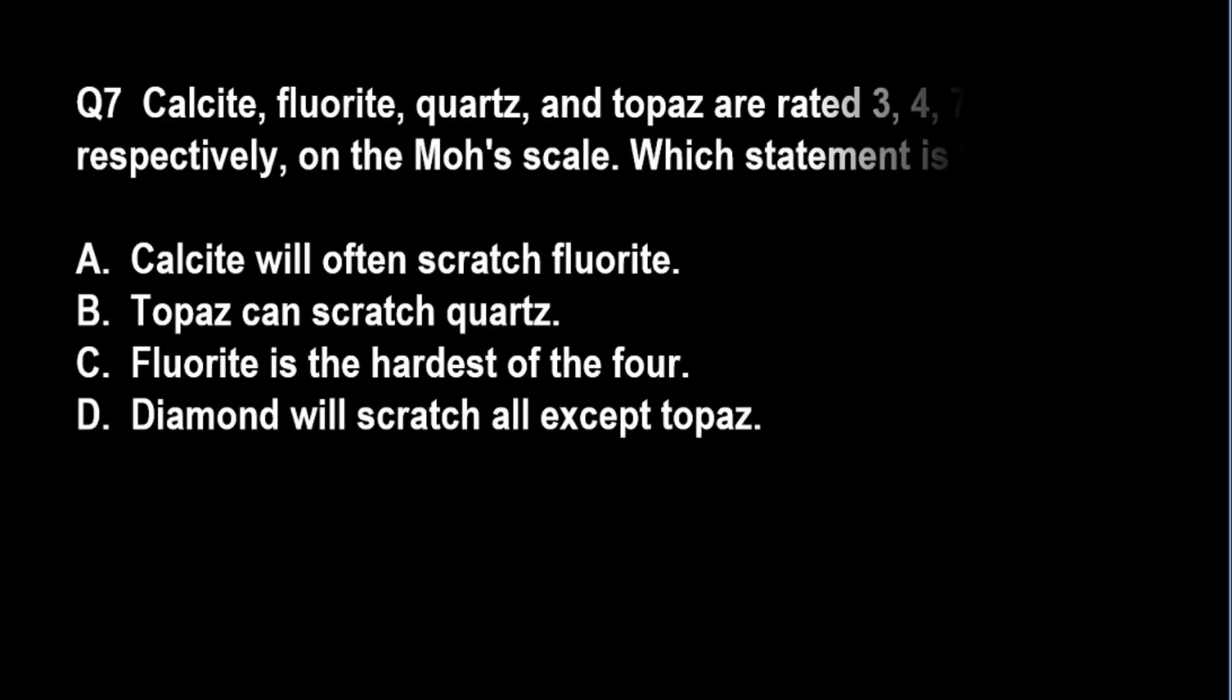Question number seven: calcite, fluorite, quartz, and topaz are rated 3, 4, 7, and 8 on the Mohs scale. Which statement is true? A: calcite will often scratch fluorite, B: topaz can scratch quartz, C: fluorite is the hardest of the four, and D: diamond will scratch all except topaz.